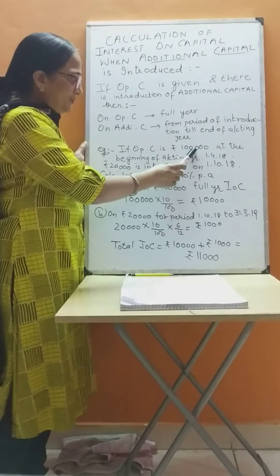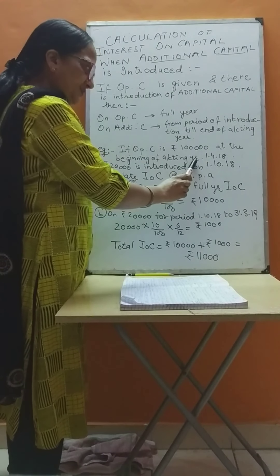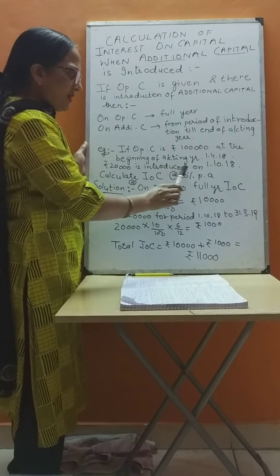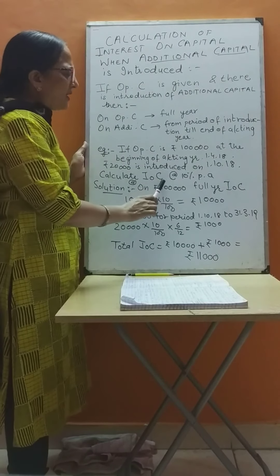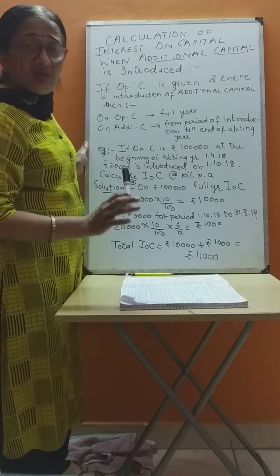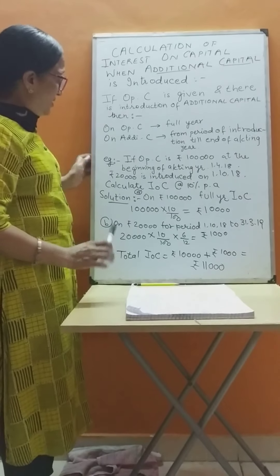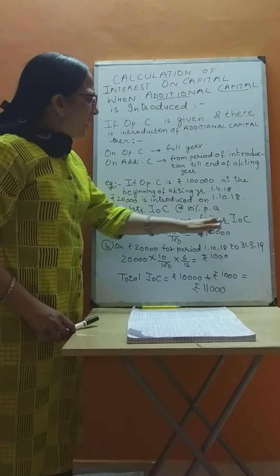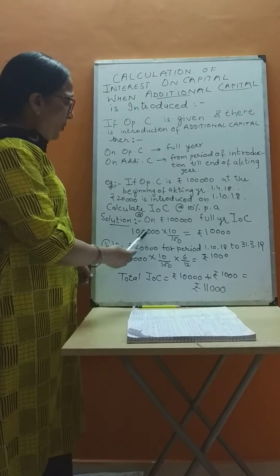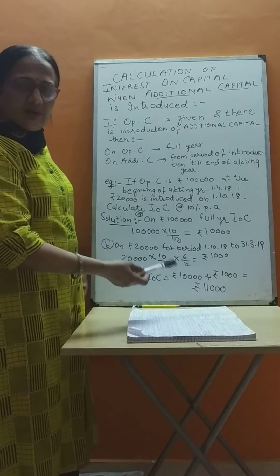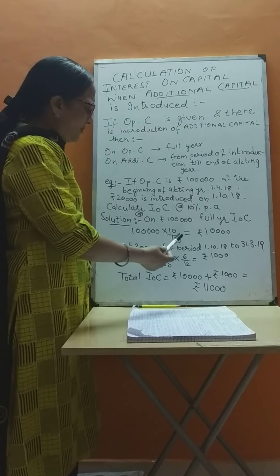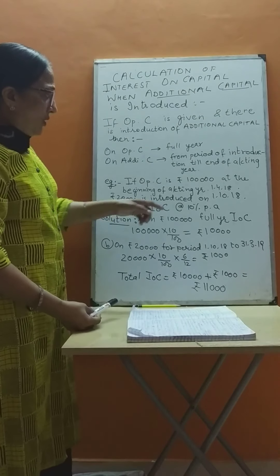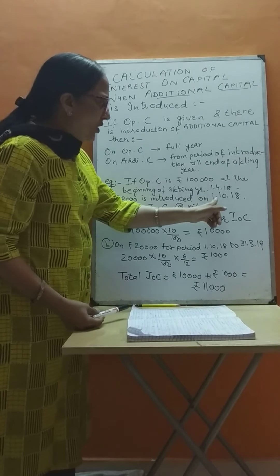For example, suppose opening capital is ₹1 lakh at the beginning of the accounting year, and ₹20,000 is introduced on 1st October 2018. Calculate interest on capital at 10% per annum, if the accounting year closes on 31st March 2019. In Part A, we calculate interest on capital for the full year on the ₹1 lakh amount: ₹1,00,000 × 10/100 = ₹10,000.